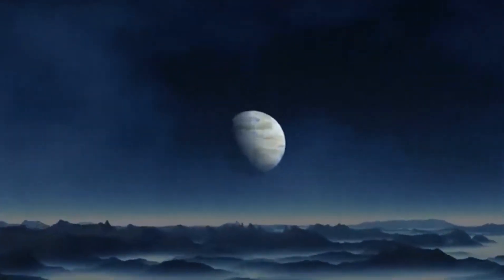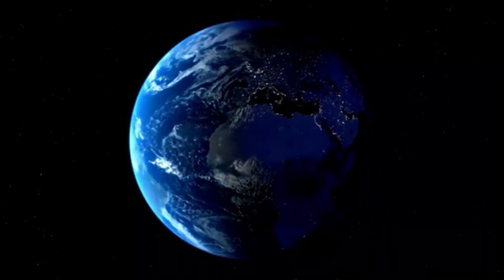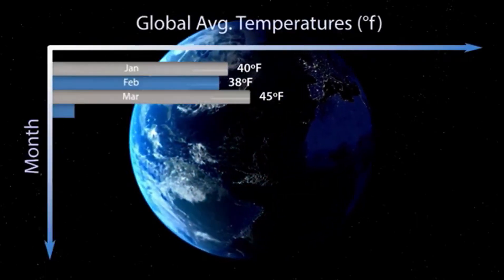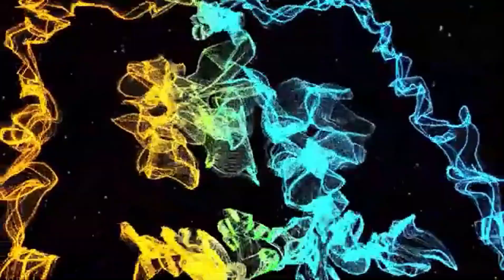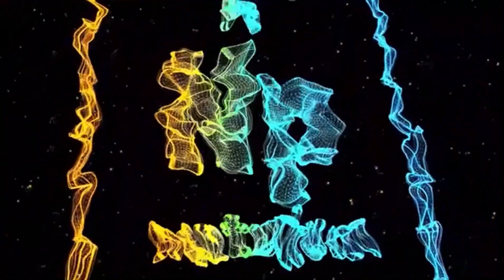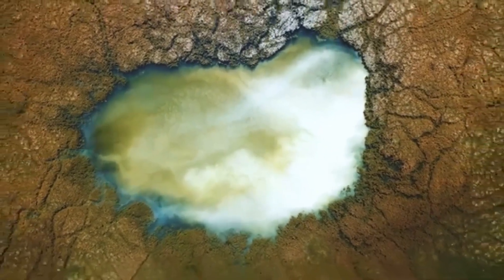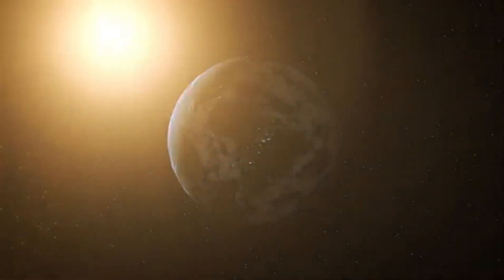To begin to answer that, we must first understand what makes K2-18b so unique. It is what astronomers classify as a sub-Neptune—a type of planet that exists in a size range between Earth and Neptune but which has no direct analog in our own solar system. Larger than our home world but smaller than gas giants, sub-Neptunes are a relatively new category of exoplanet that challenge conventional models of planetary classification. Their ambiguous nature makes them difficult to understand, and yet their potential to host life makes them deeply compelling.